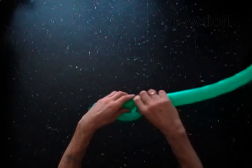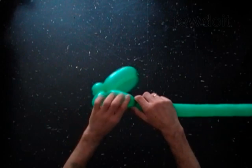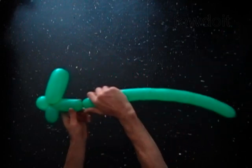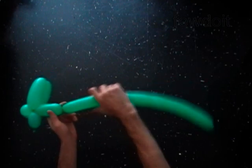Twist the sixth four inch bubble. The rest of the balloon is the seventh bubble. It is the tail of the snake.